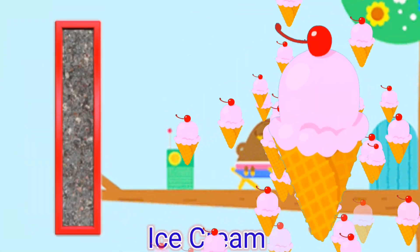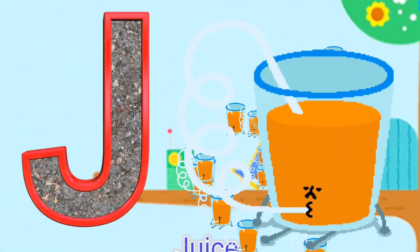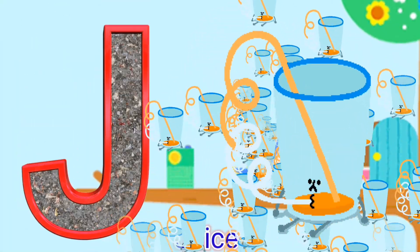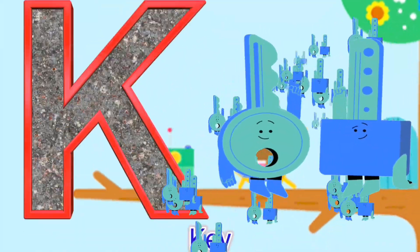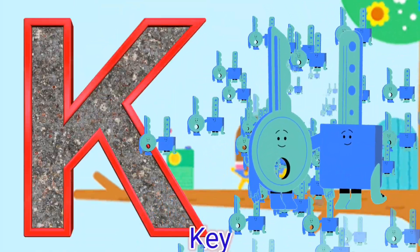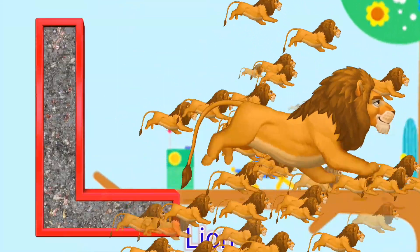I for ice cream, J for juice, K for key, L for lion.